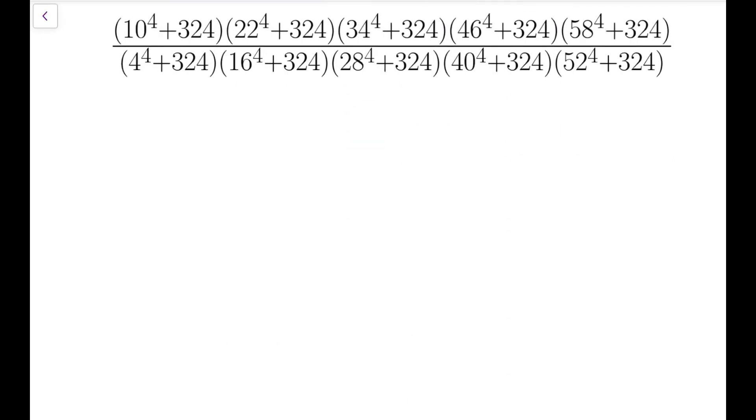From what we have achieved just now, for example, 10 to the 4 plus 324 can be written as 7 squared plus 9, multiplied by 13 squared plus 9. So it can be split this way.